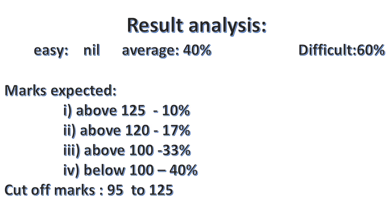The difficulty level is 60%. The expectation mark is 125. Above 121 is 17, above 100 is 133, and below 100 is 140. The cut-off range is 95 to 125. This is the declared result.